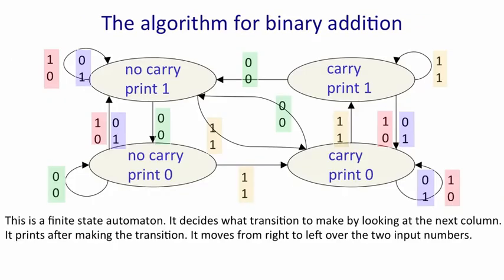This is a picture of the algorithm for binary addition. The states shown here are like the states in a hidden Markov model, except that they're not really hidden. In addition, the system is in one state at a time. When it enters a state, it performs an action. So it either prints a one or prints a zero.